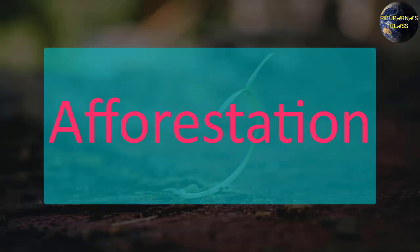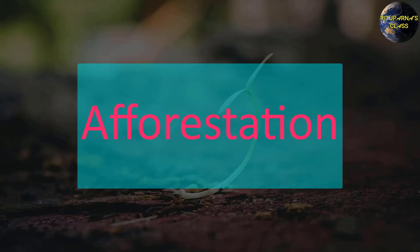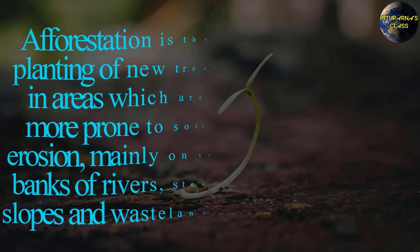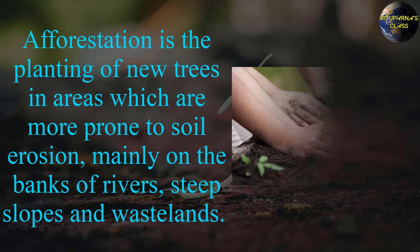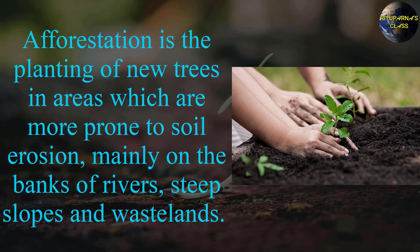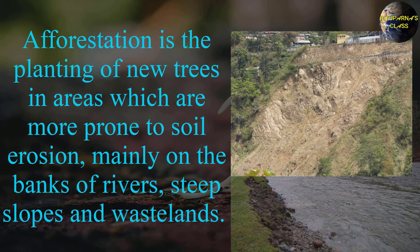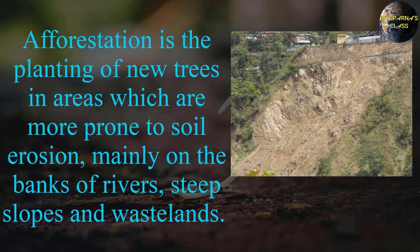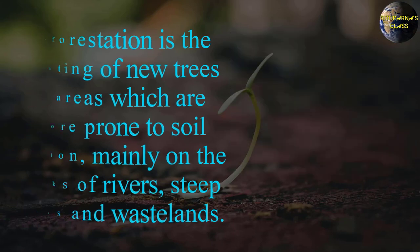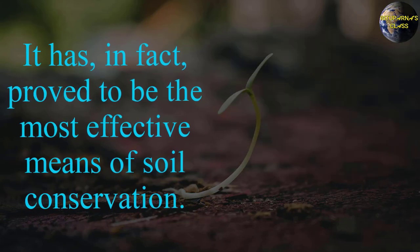Next is afforestation. Afforestation is the planting of new trees in areas which are more prone to soil erosion — mainly on the banks of rivers, steep slopes, and wastelands. It has in fact proved to be the most effective means of soil conservation.